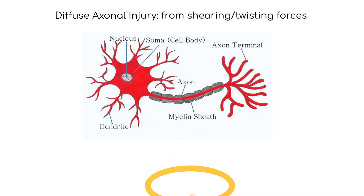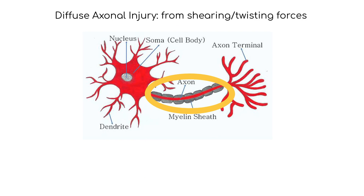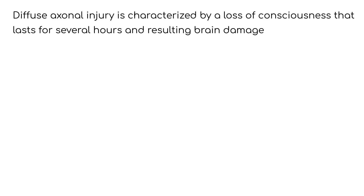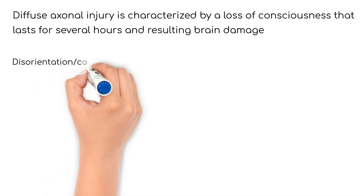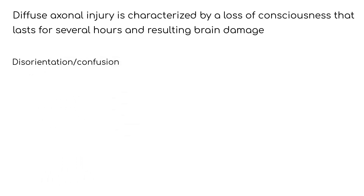Diffuse axonal injury occurs when shearing or twisting forces cause damage to the axon portion of neurons. Diffuse axonal injury is characterized by a loss of consciousness that lasts for several hours and resulting brain damage symptoms.